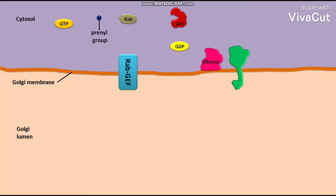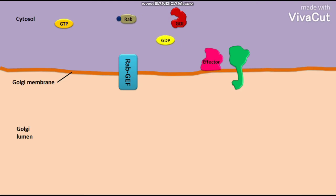First of all, in the cytosol of a cell, the GTP-binding protein Rab binds to a prenyl group. As a result, the Rab is modified. This modification allows the Rab to insert into a membrane. The modified Rab then binds to a GDP.